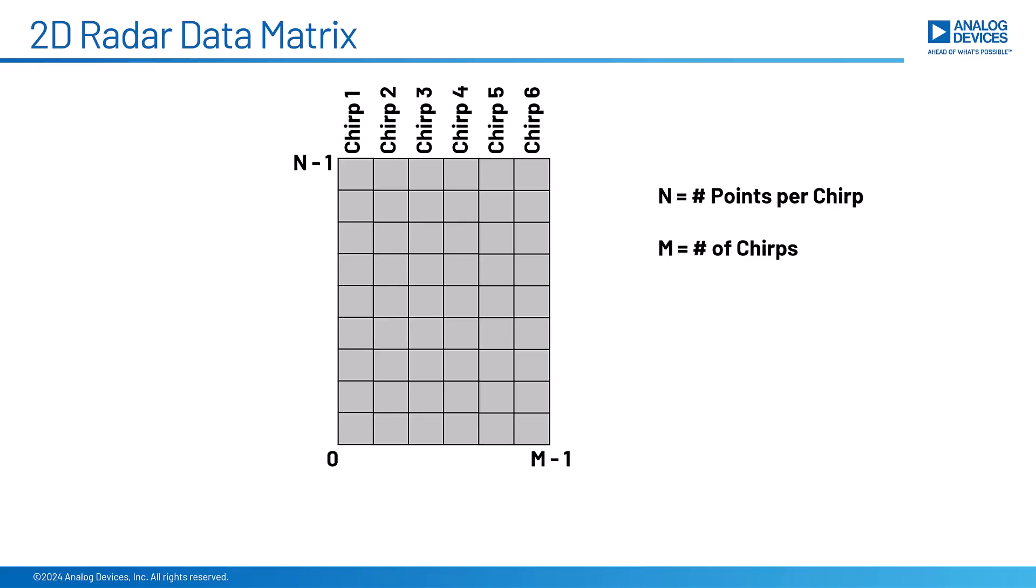And if you think about it, we now have time on the y-axis, but we also have time on the x-axis. And so to prevent any confusion, I'm going to label the time on the y-axis fast time, and the time on the x-axis I'll label slow time. It's called slow time because if you look across each of the columns, those data points are all separated by the pulse repetition interval, which is on the order of milliseconds.